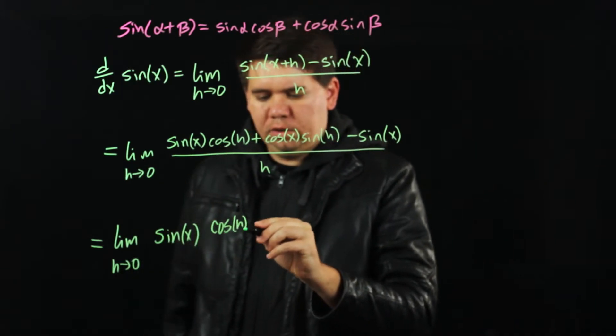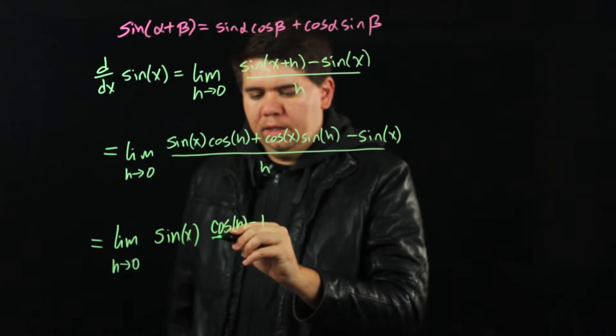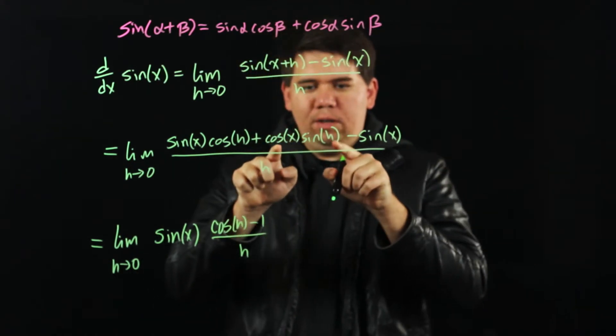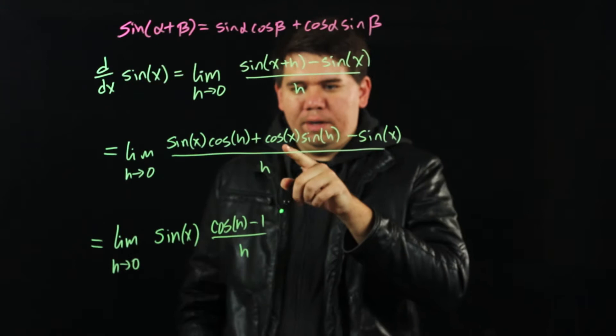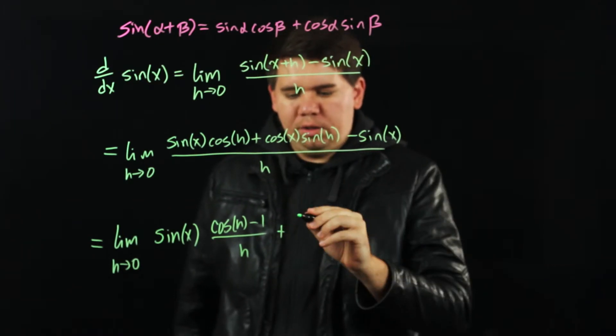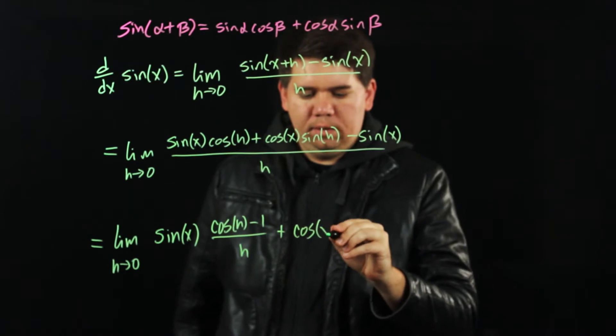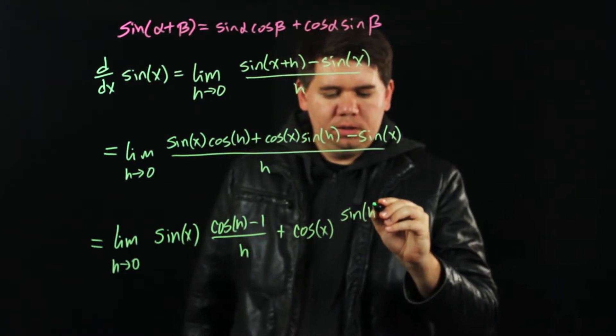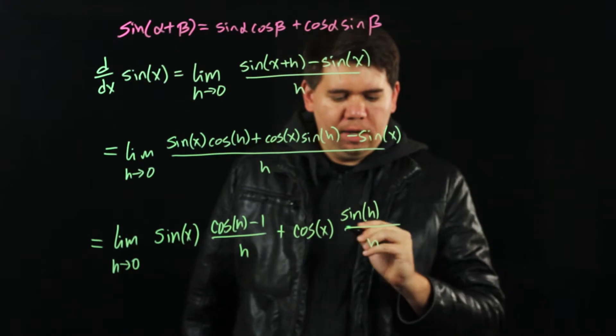And then we still have this term, a cosine of x times sine of h. So let me pull out just the cosine of x. And I'm left with sine of h over h.